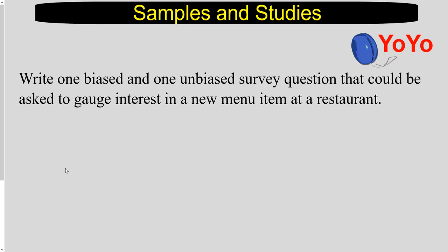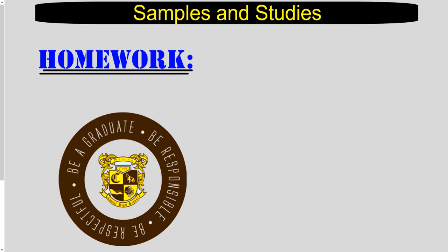An unbiased example: 'Would you be interested in trying our new menu item, the fillet of cod?' A biased version: 'Would you like to try our deliciously hand-breaded, golden, crispy, fresh-caught wild Atlantic cod served on a bed of hot crispy French fries?' The second version encourages a positive response through enticing language. You could bias it negatively too: 'You're not interested in trying that greasy piece of old fish, are you?' The wording of a question can heavily influence responses one way or the other.